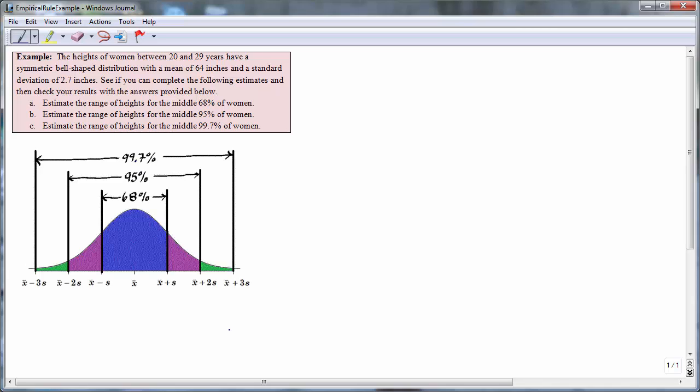So in Part A, we're looking to estimate the range of heights for the middle 68% of women. So we take the mean of 64 and subtract 2.7 to obtain 61.3, and we take the mean of 64 and add 2.7 to obtain 66.7. So hence, the middle 68% of women are between 61.3 and 66.7 inches tall.